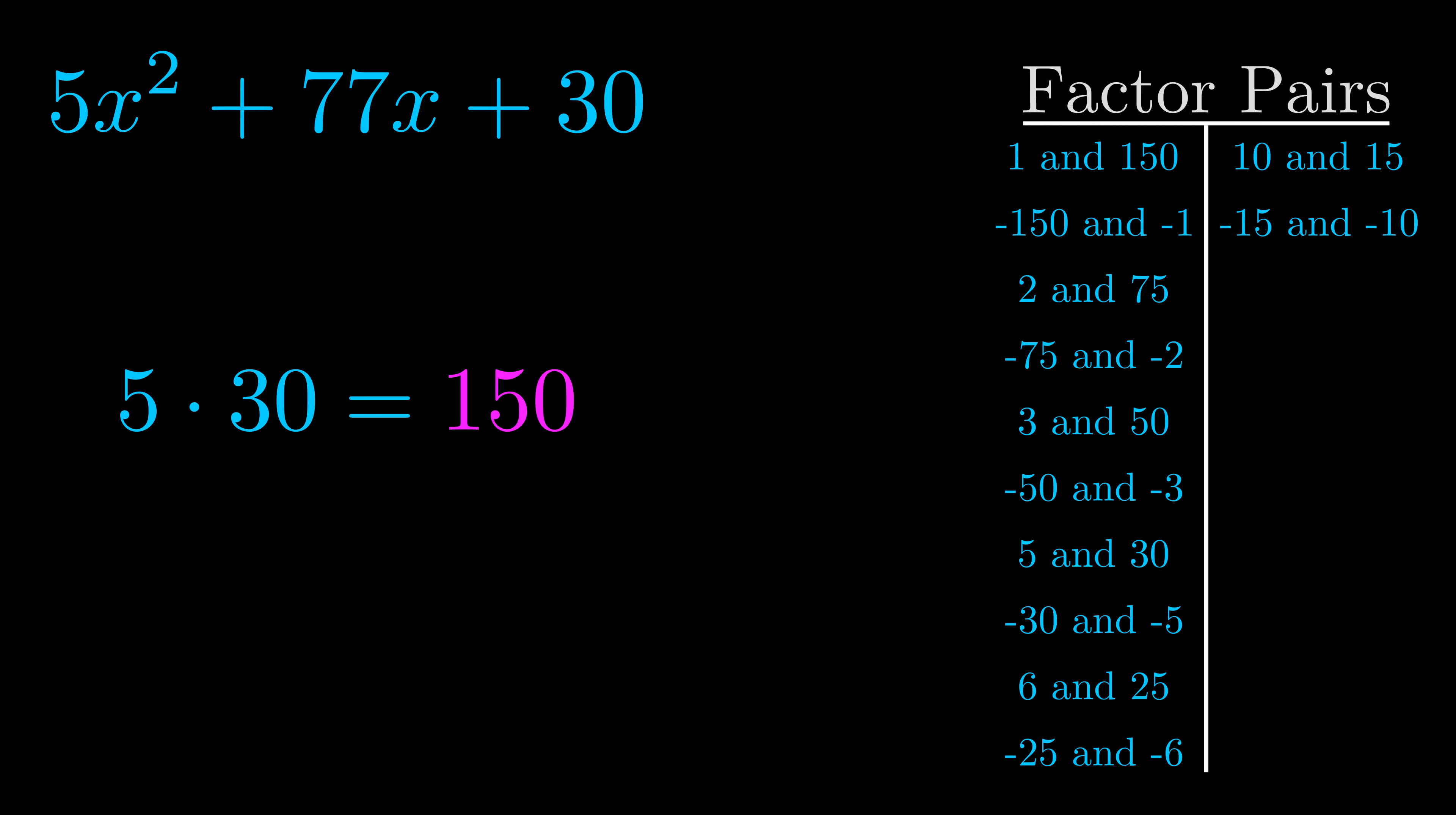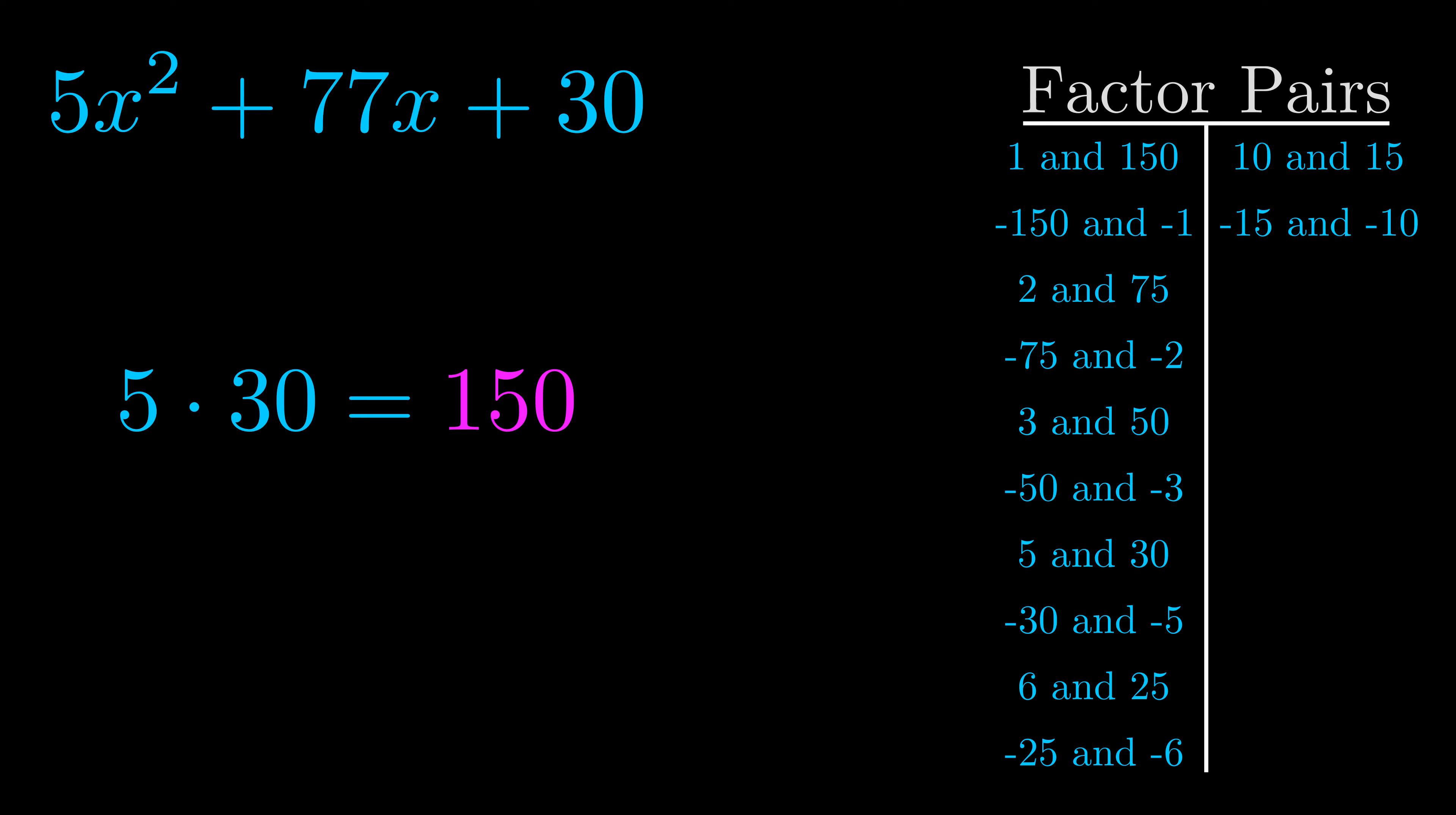Now once you have these factor pairs, the goal is to find which of these pairs adds to the b value. The b value is the coefficient on the x term. That's the middle term, the one that we haven't done anything with yet. And really this is the only factor pair that we need.